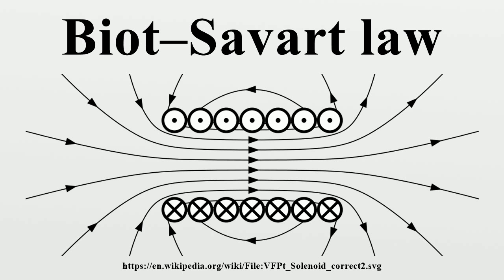The Biot-Savart law is used for computing the resultant magnetic field B at position r generated by a steady current I — a continual flow of charges which is constant in time and the charge neither accumulates nor depletes at any point. The law is a physical example of a line integral being evaluated over the path C in which the electric currents flow.